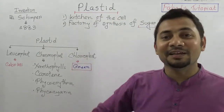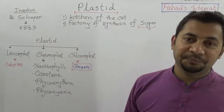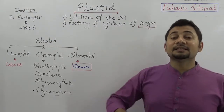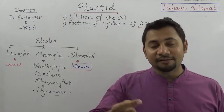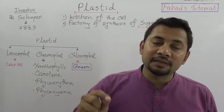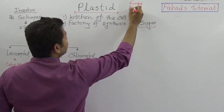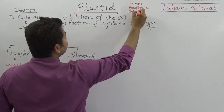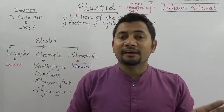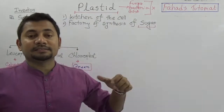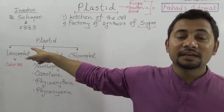In the invention history of plastids, we must know the name Schimper, who in 1883 first named the plastid. This is the largest organelle in the plant cell, not in the animal cell, because animal cells do not have plastids. Also note that fungi, bacteria, and blue-green algae do not have plastids, but higher plants and unicellular plants do.